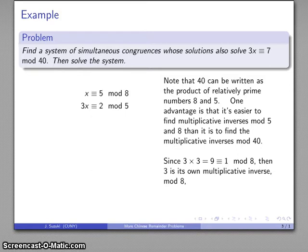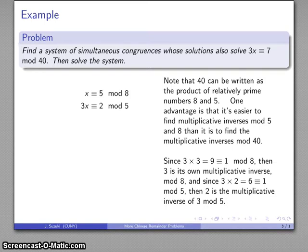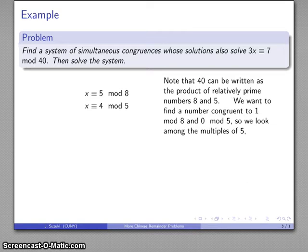Likewise, mod 5, I know that 3 times 2 is 6, which is ≡ 1 mod 5. So 2 is the multiplicative inverse of 3. I'll multiply by 2 to get 6x ≡ 4. 6x reduces mod 5 to x, so x ≡ 4 mod 5.